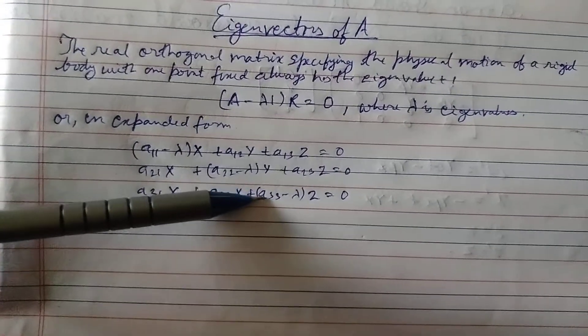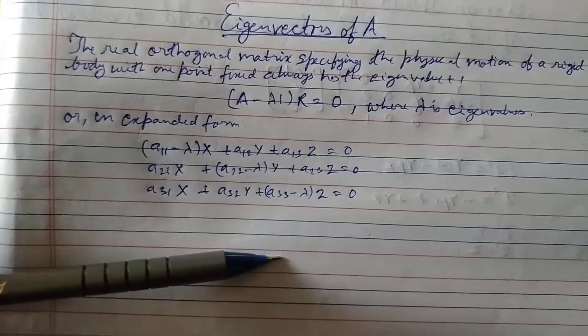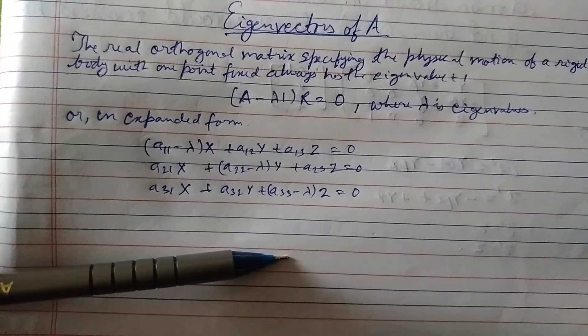A32 Y plus A33 - λ times Z equals 0. Thanks very much. If you like the video, please like and subscribe and also comment the topic you want to know about.